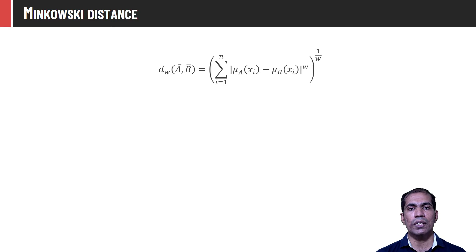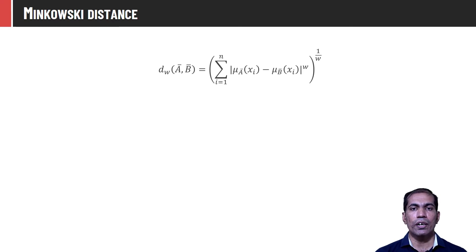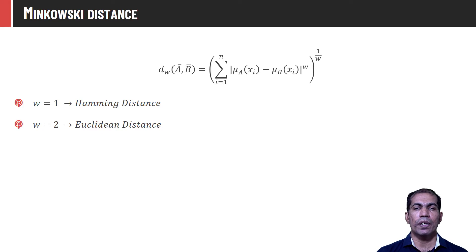Minkowski distance is a more generalized version of distance. It is computed as: d_w(A-bar, B-bar) = (sum over i=1 to n of |μ_A(x_i) − μ_B(x_i)|^w)^(1/w). By setting different values of w we get different kinds of distances. For example, if w=1 this reduces to Hamming distance; if w=2 it reduces to Euclidean distance. By setting appropriate values of w we can find different orders of distance between a given pair of vectors.